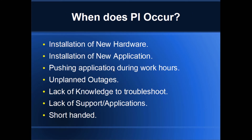So when does production impact occur? First, installation of new hardware. If you have to replace 200 out of a thousand computers, you have to organize this in a manner that minimizes production impact — this is a huge logistical project. Same thing with installation of new applications. If you have to install an application to a large number of computers, there are logistics involved to do this properly. Pushing applications during work hours is also a really bad idea. You do not want to push a new update in the middle of the day and have it restart computers for a thousand users — this is really bad.